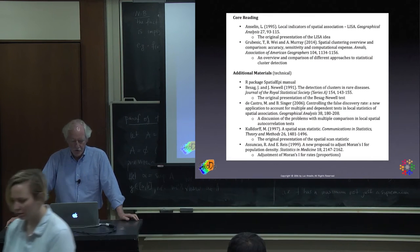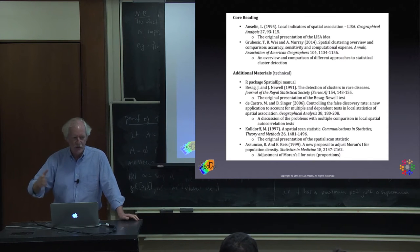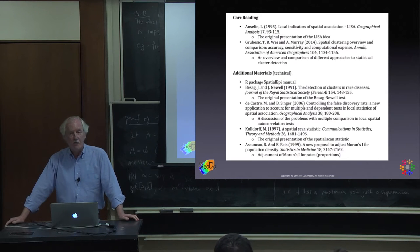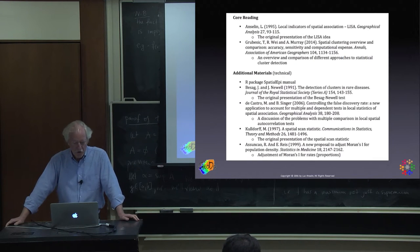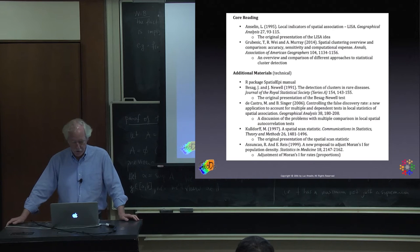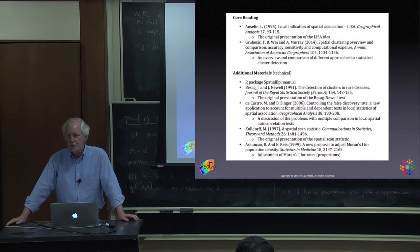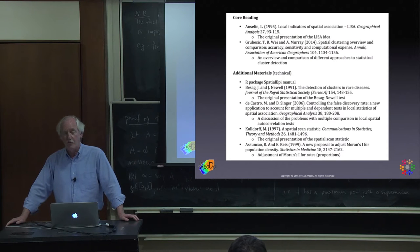In the lab, we'll be using a package called Spatial Epi. For scan statistics, there's a brand new package available. Classic articles by Besag and Newell and Kulldorff define the statistics we'll discuss. Assunção and Reis outline a way to standardize rates and apply spatial autocorrelation statistics — this is built into GeoDa. There's also an article on the multiple comparison problem, which is a real issue for both local spatial autocorrelation statistics and scan statistics.